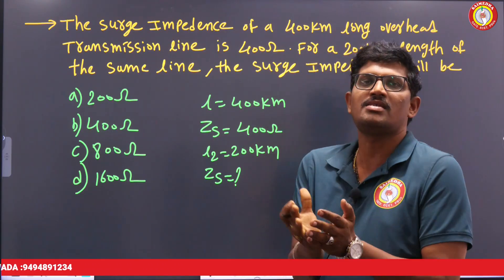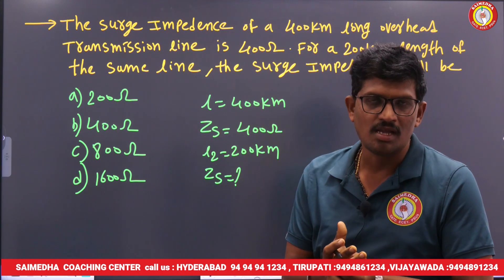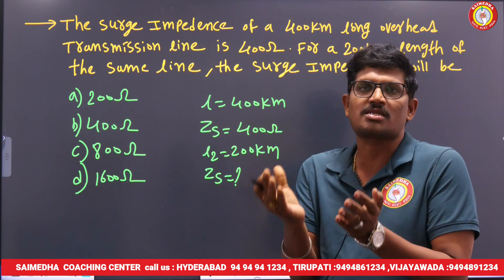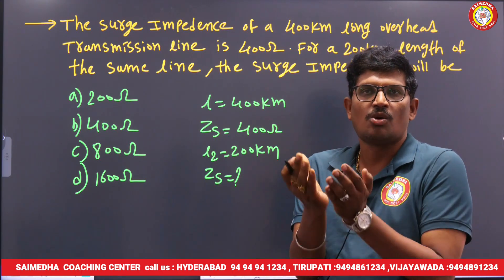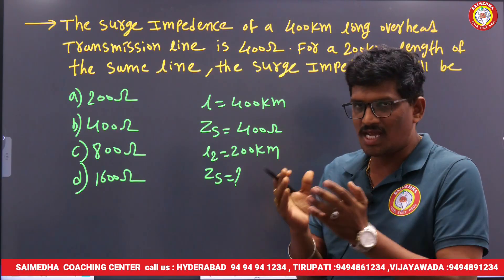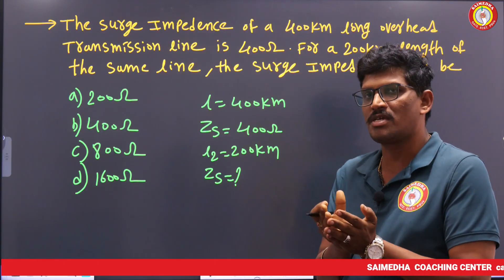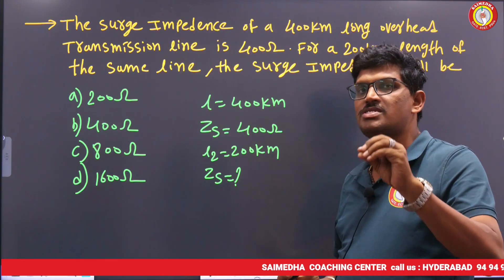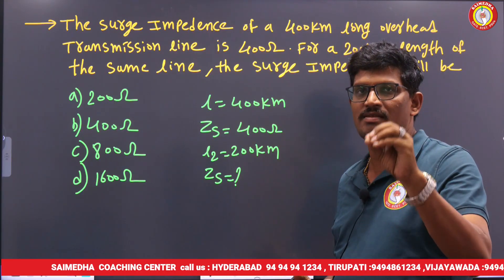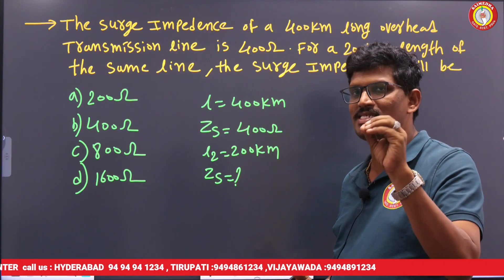First, let me discuss what surge impedance is. Surge impedance mostly occurs under the idle condition of the transmission line — that is, the lossless transmission line condition. In a lossless transmission line, one impedance value occurs, and that is called the surge impedance.